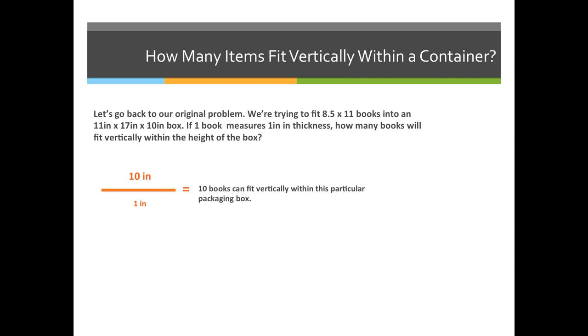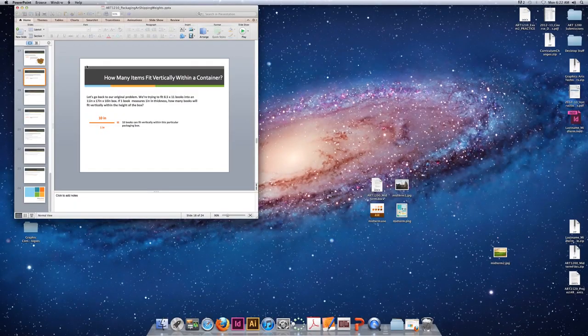Now we have to go back and look at the original values and the measurements of the box 11 by 17 by 10. We have to be able to recognize that 10 inches is the height of the box and then we can divide that by the thickness of one item, which is 1 inch. So 10 books will be able to fit vertically in this particular packaging box.